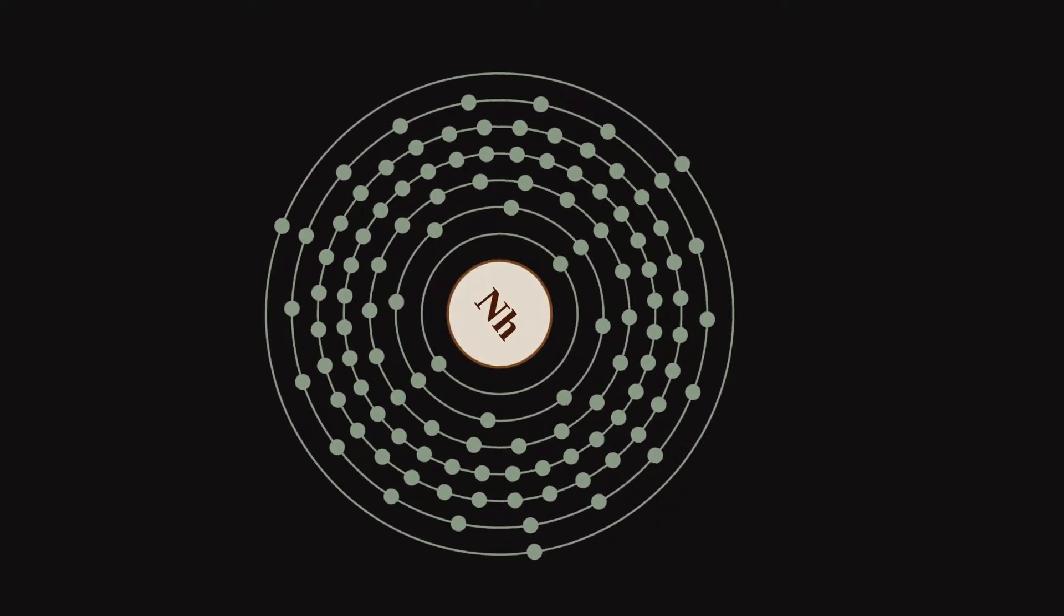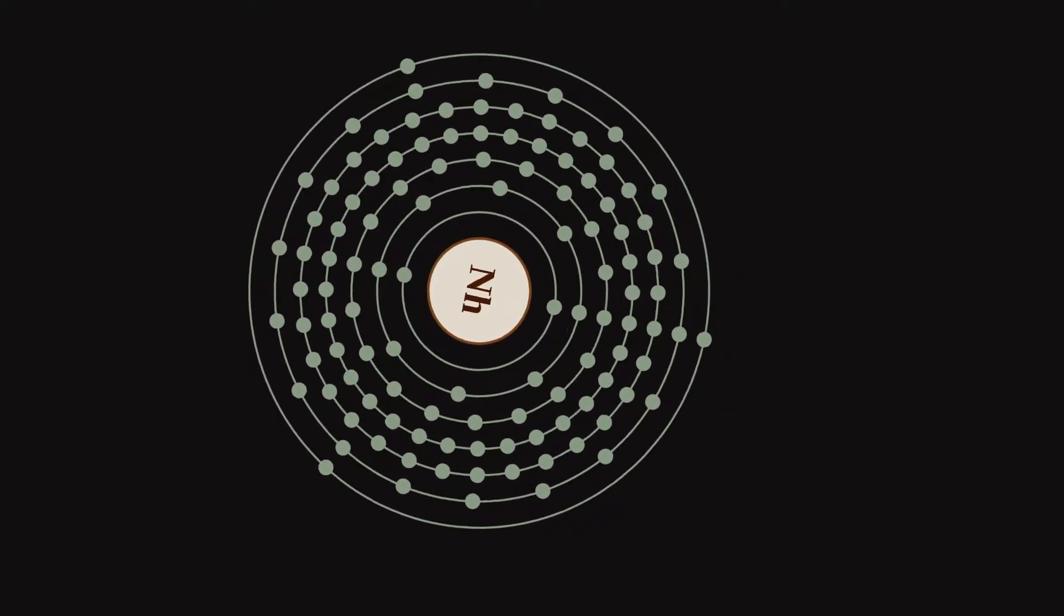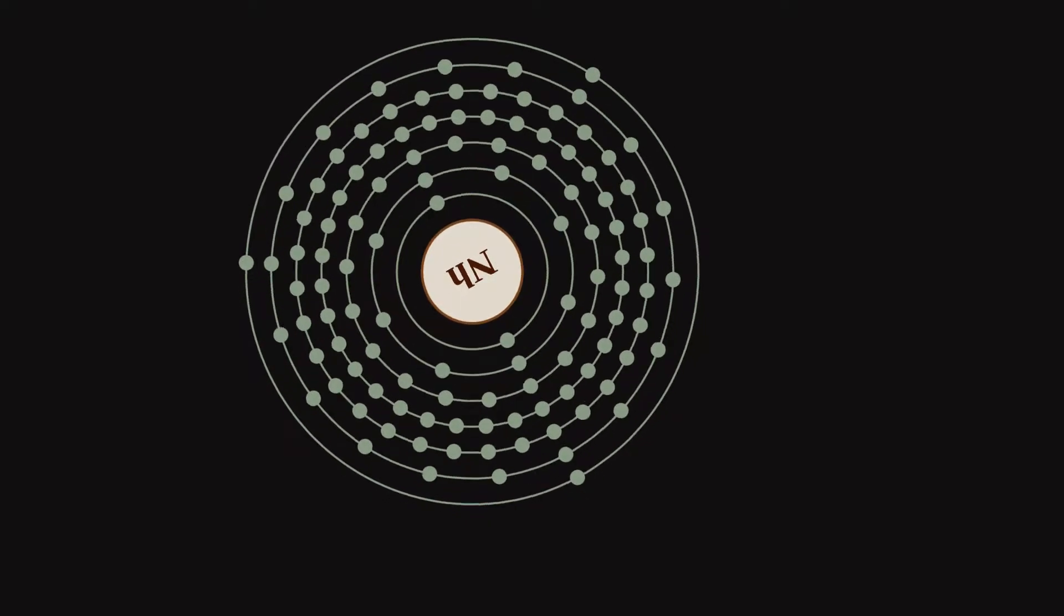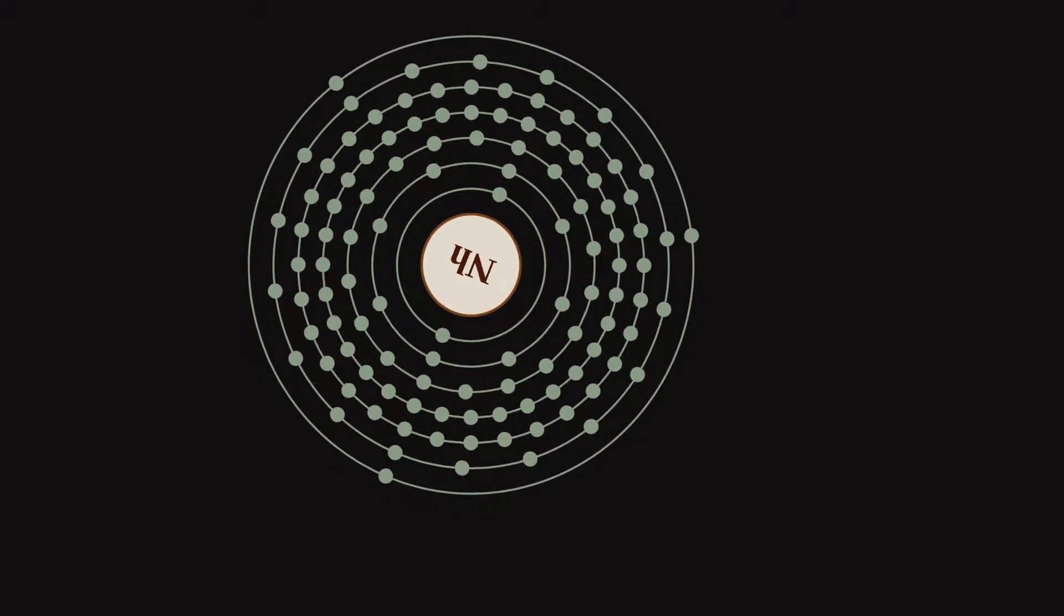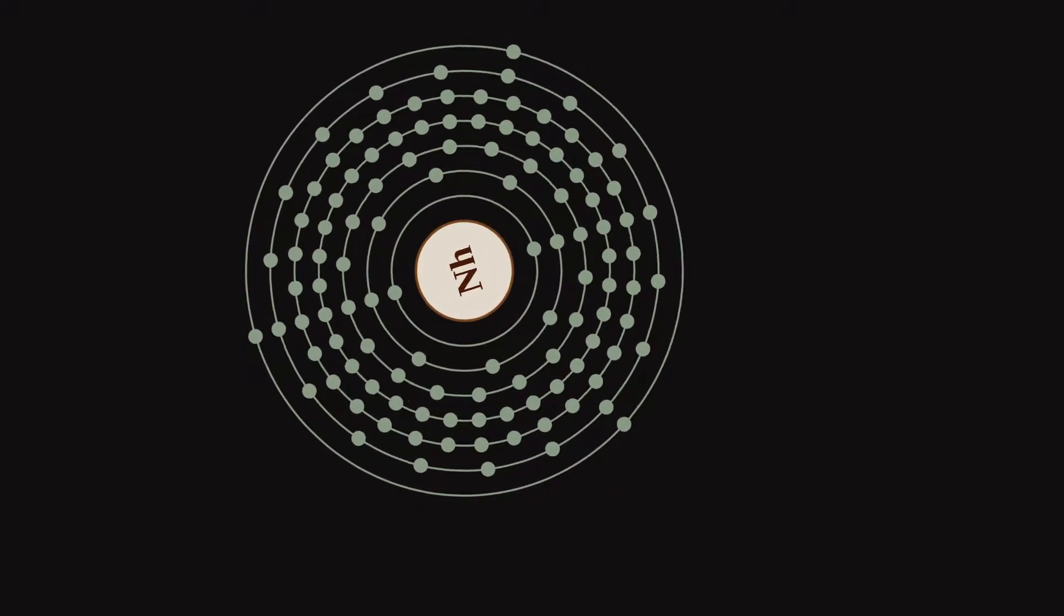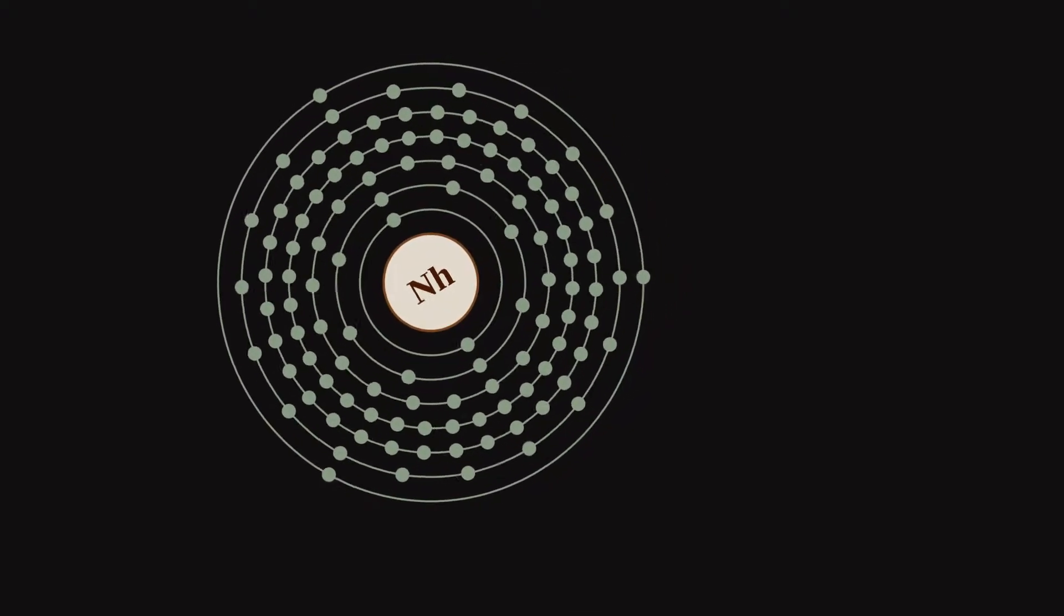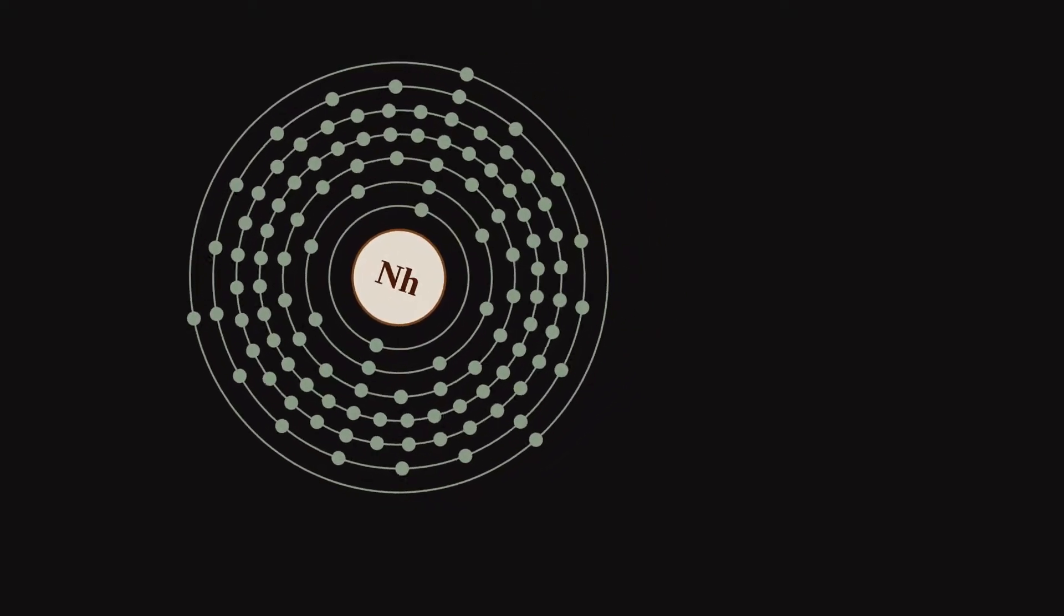Nihonium is a synthetic chemical element with symbol Nh and atomic number 113. It is extremely radioactive. Its most stable known isotope, Nihonium-286, has a half-life of about 10 seconds.